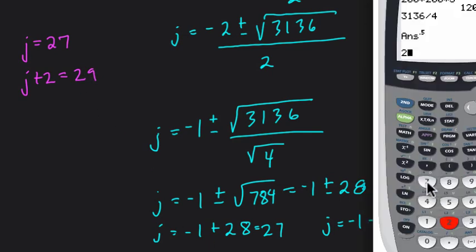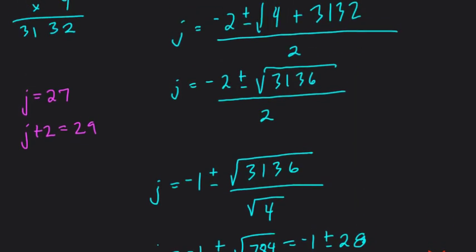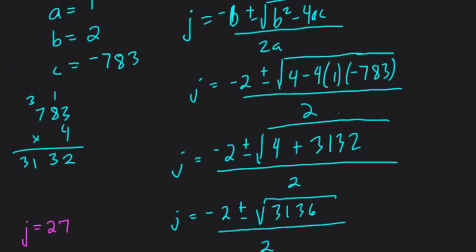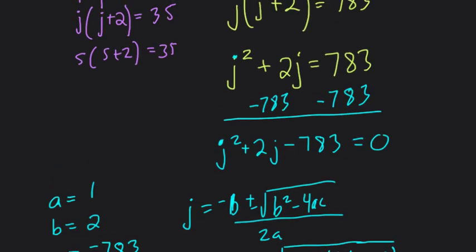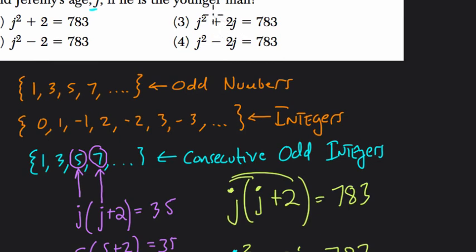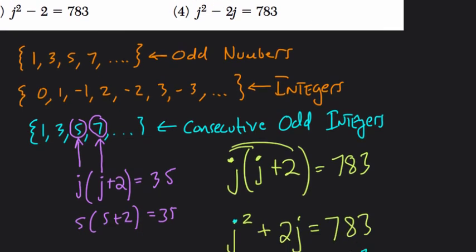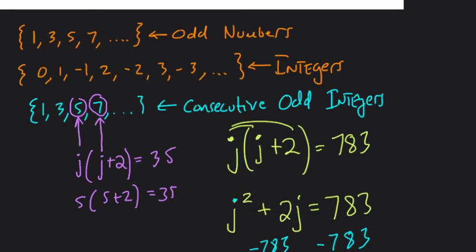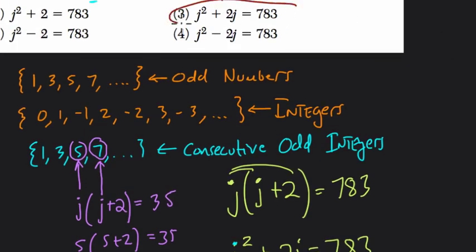And just to confirm that this works, let's see if their product multiplies to what we need, which is 783. So the product of these two ages, these two consecutive ages, is 783. Now, I know in this problem they didn't ask us to go anywhere near that far. But I could see that clearly being a question that you might ask, so we should have the ability to go further. Anyway, the answer to this problem is J squared plus 2J equals 783. Choice 3. Alright, hope this helped.